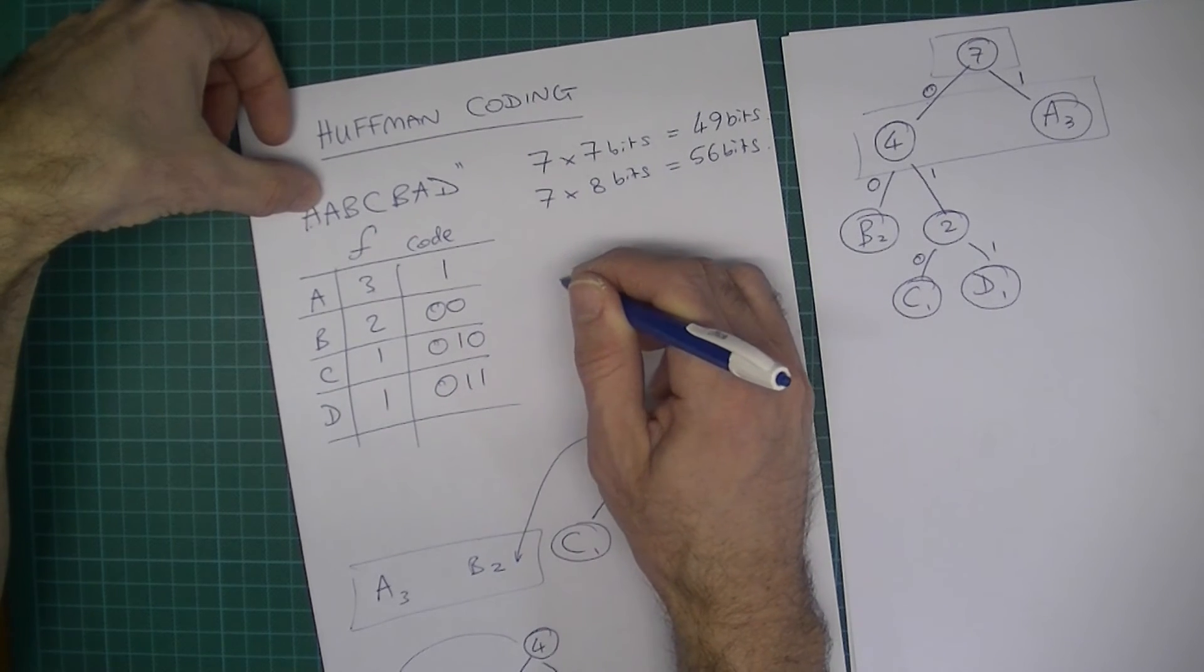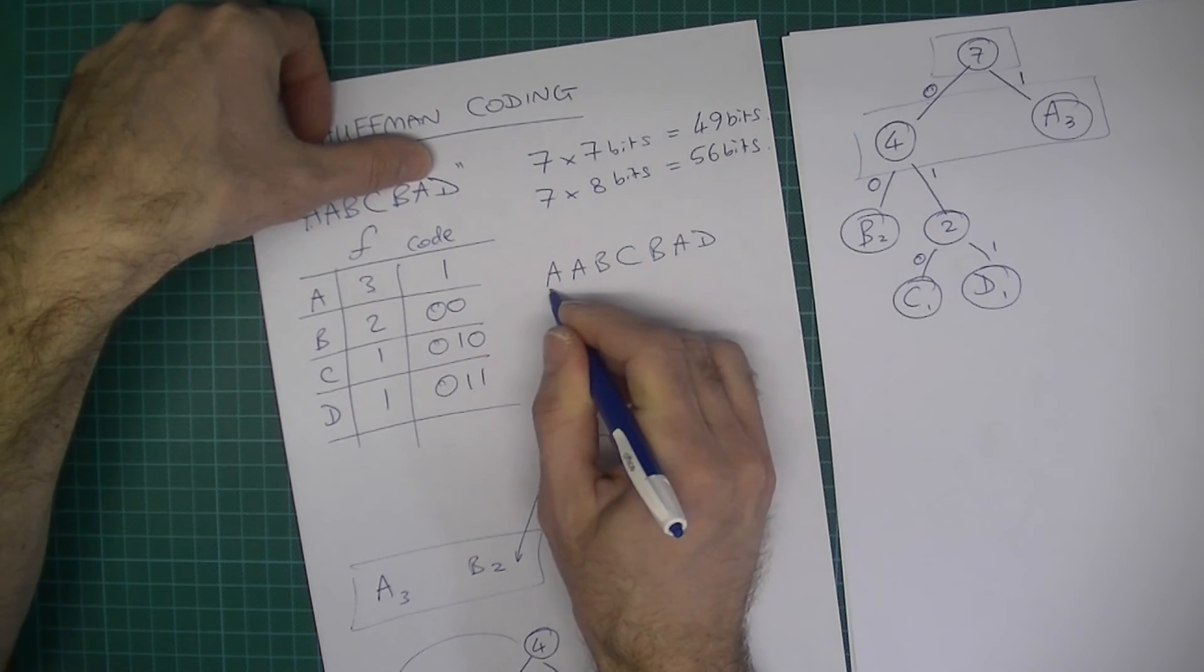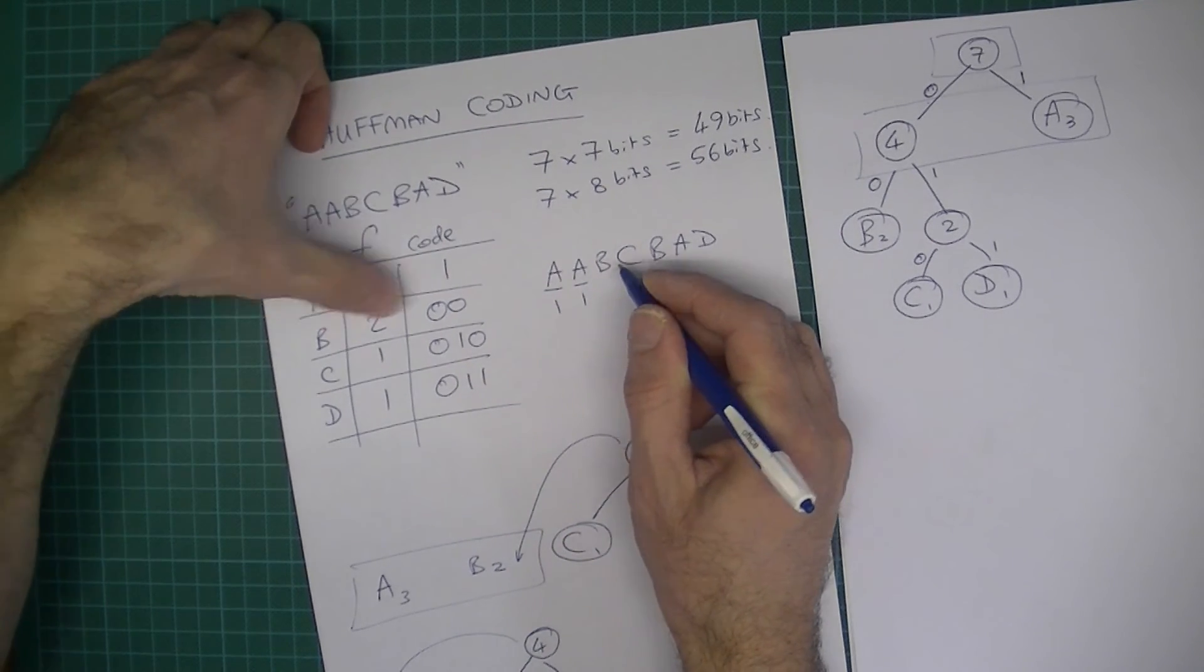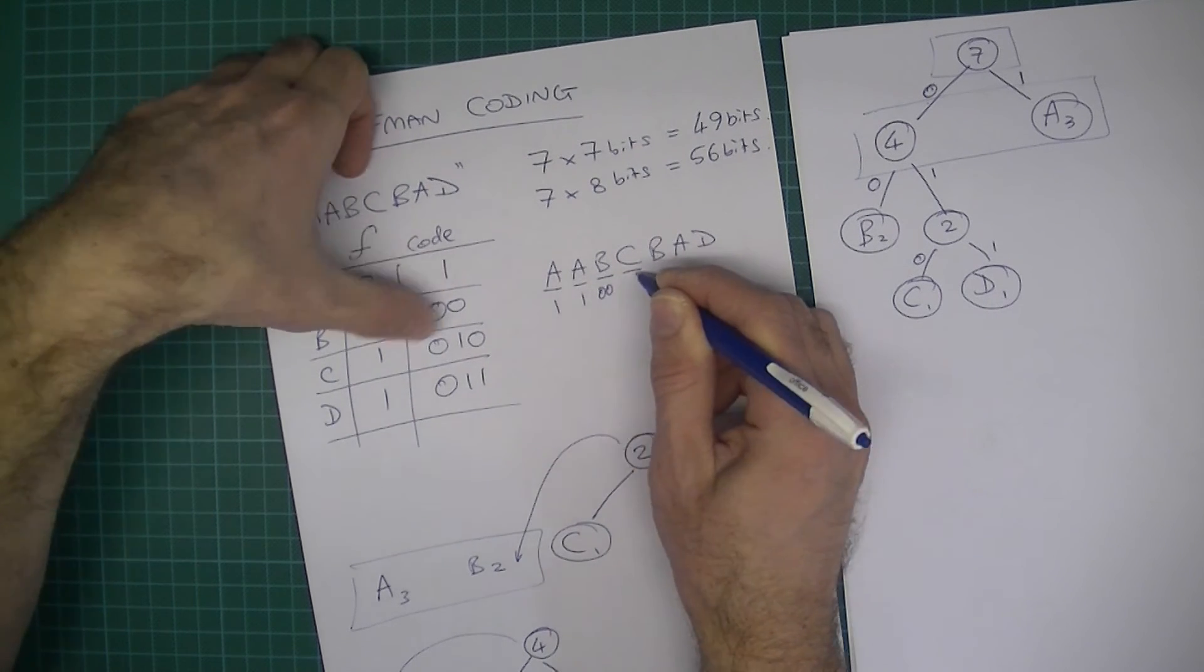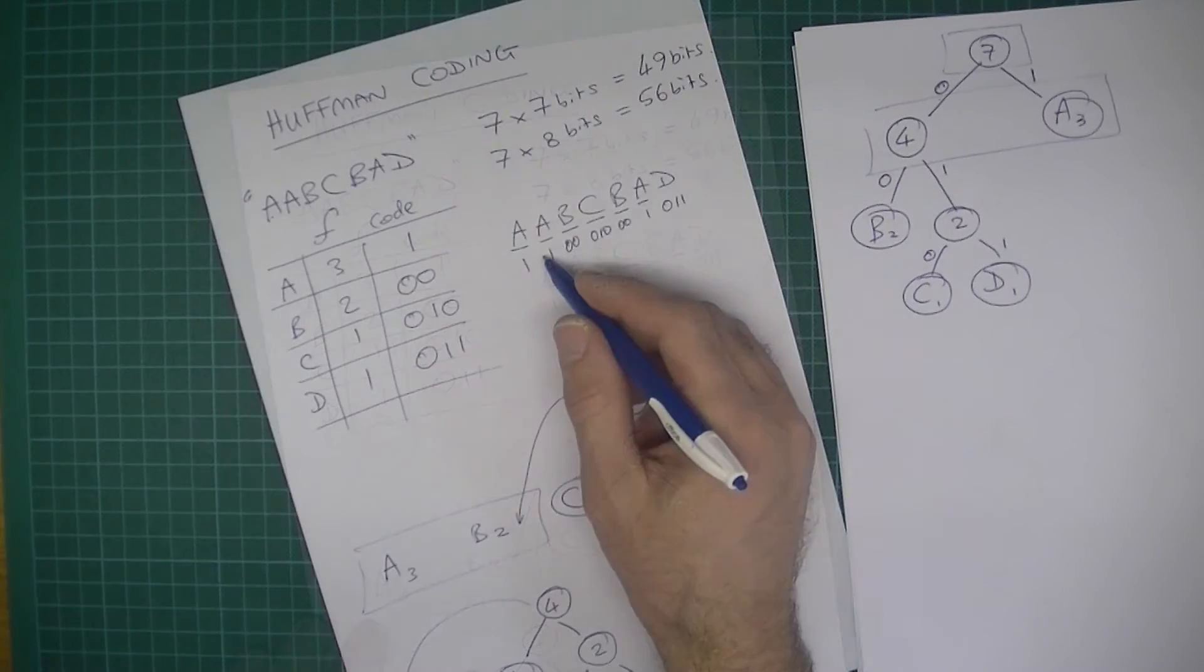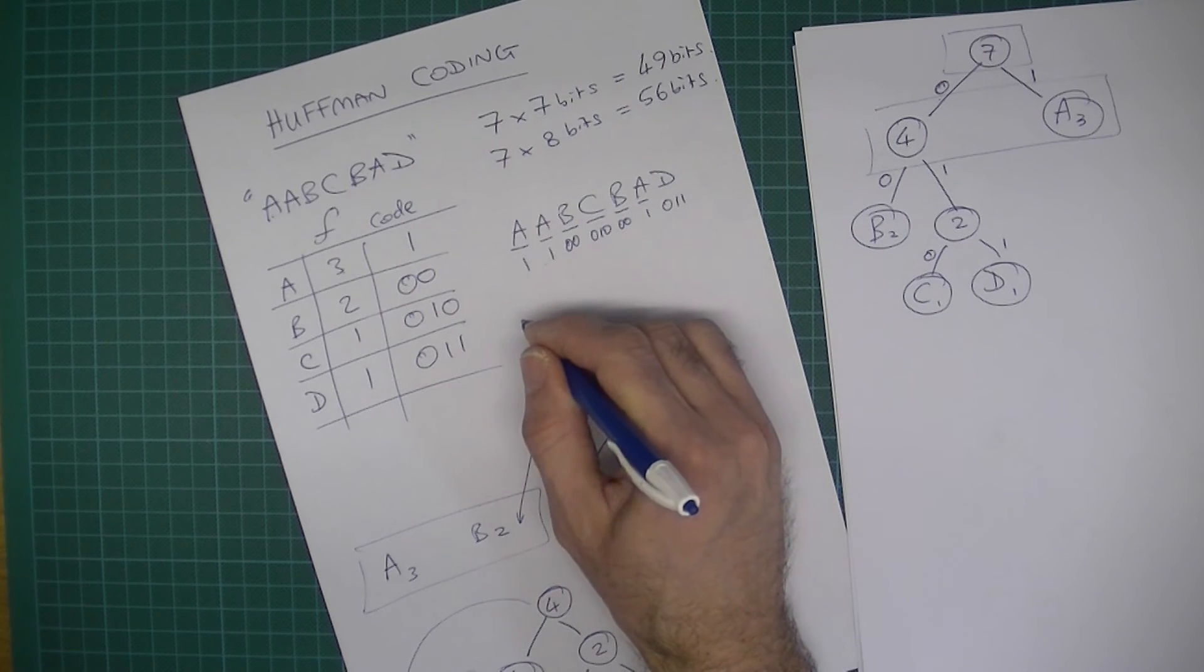Now that we know the codes, we can encode this. So letter A is 1, letter A is 1, the letter B is going to be 00. In Huffman coded bit patterns, there won't be any spaces, so let's just write it out now with no spaces.